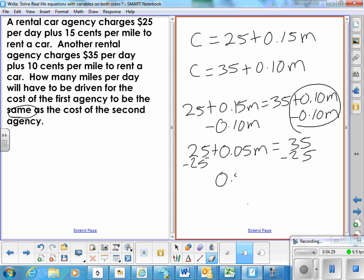That's $0.05 times the number of miles is equal to $0.35 minus $0.25, which is $0.10. So there's a $10 difference in the two companies, the two agencies, how much they charge initially. And the difference between their cost is $0.05 per mile.